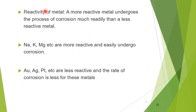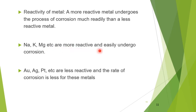We discuss the first factor: reactivity of metal. Consider metals such as sodium, potassium, and magnesium — these are first or second group elements and are more reactive metals. Their reactivity is high. Corrosion is also one of the chemical processes, so these metals undergo corrosion easily. Sodium, potassium, magnesium, etc. are more reactive and easily undergo corrosion.